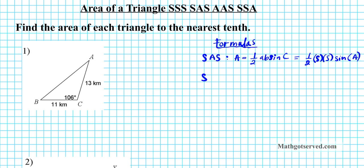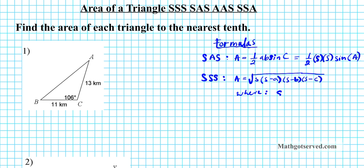SAS is very easy — when you have an SAS situation, all you simply do is plug in the two sides and the included angle into the equation and you're done. When you have an SSS situation you cannot use trigonometry for this. You have to use a special formula known as Hero's Formula. The area is given by the square root of the semi-perimeter S times S minus A times S minus B times S minus C. The semi-perimeter is what you get when you add the three sides A plus B plus C and divide by 2.